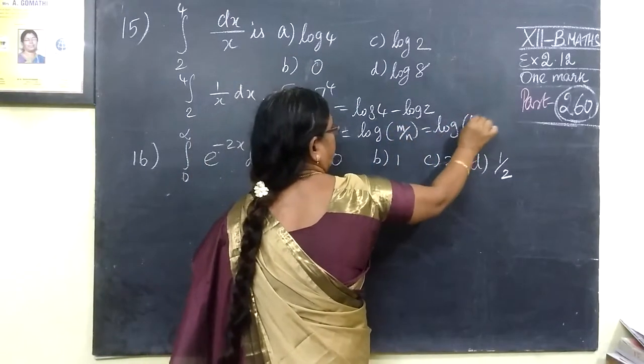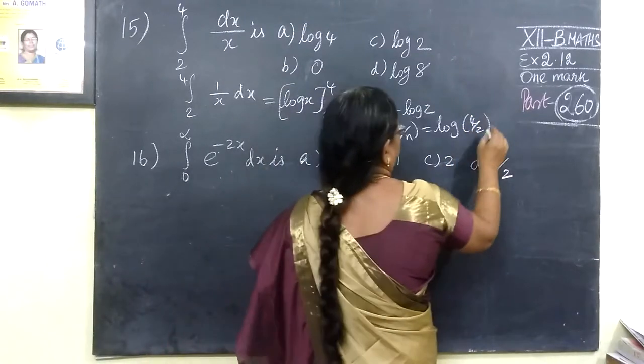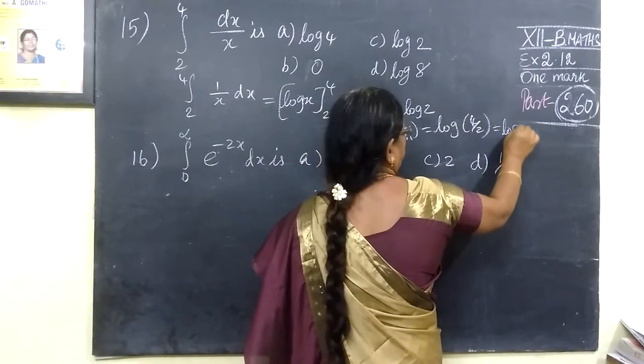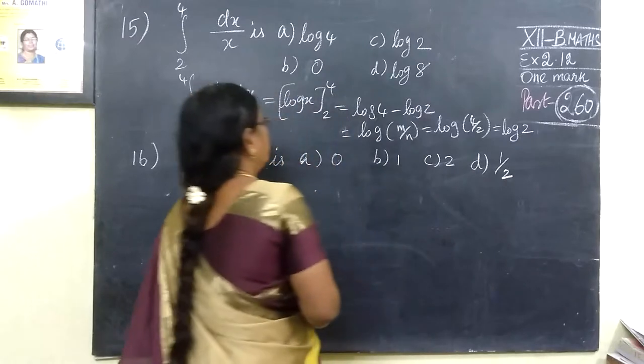So log 4 by 2. We cancel. Log 2. So what is the option?